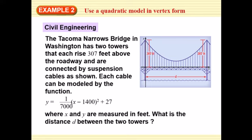And they are connected by suspension cables as shown. Each cable can be modeled by this function. So I do want you to keep in mind, it is a positive parabola. We see that a over here is positive, so it opens up. Where x and y are both measured in feet. So, what is the distance? We actually want to find the distance between those two. So somehow we're going to be using the 307 in order to find that. So, let's break it down.